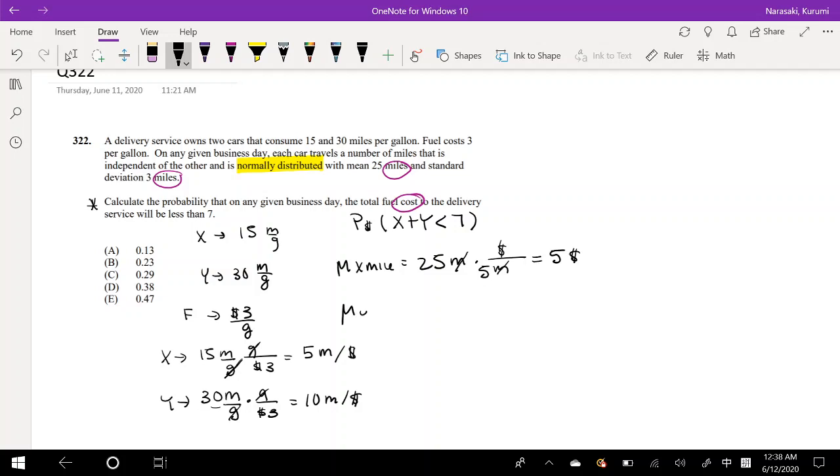And the mean of y in general is 25 miles. We can just do the same thing we just did. We want to cancel out the miles, so we're going to divide by 10 miles per dollar. So the miles cancel out, and you just divide across and you get $2.5.